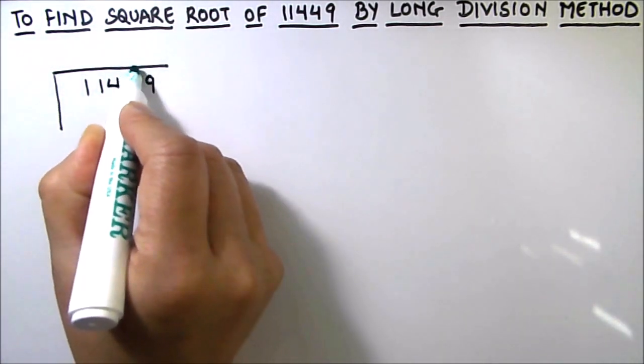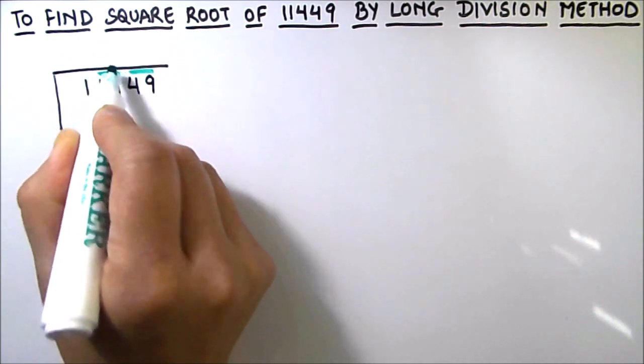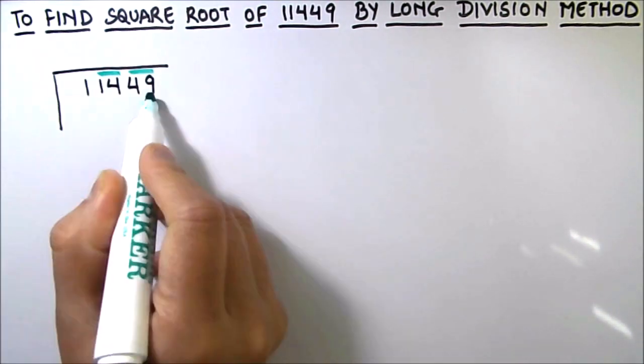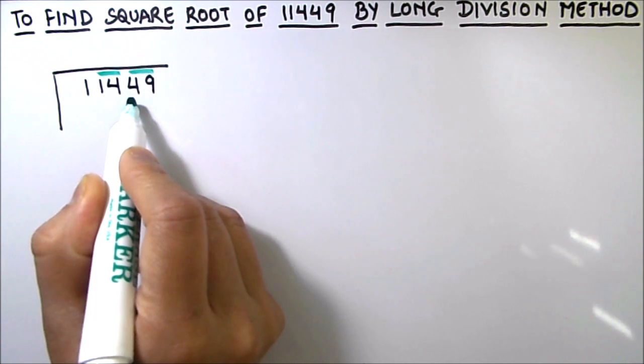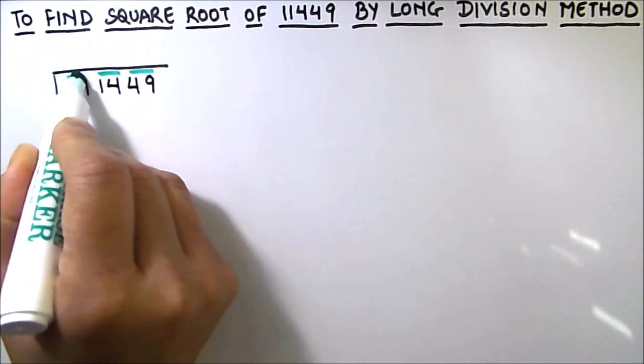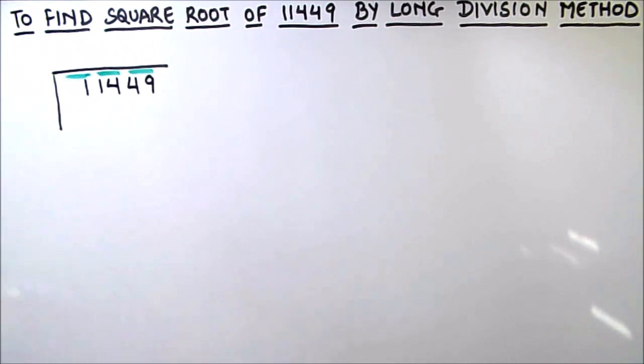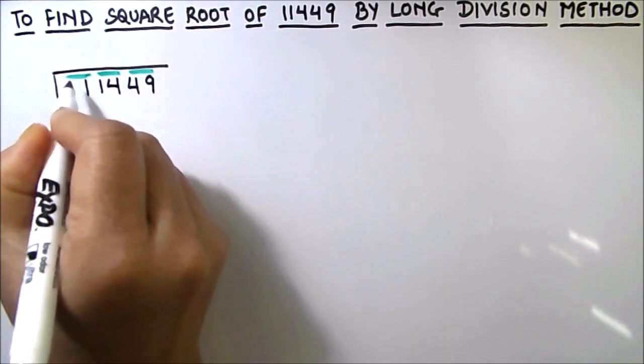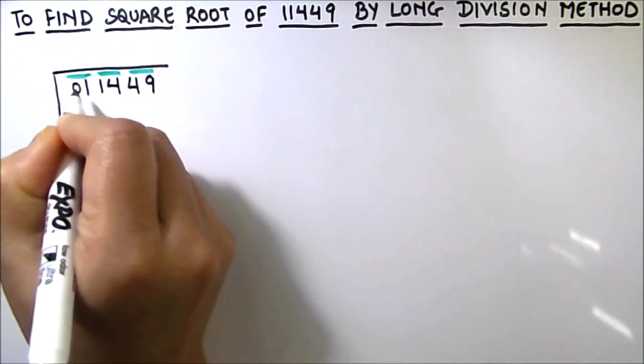So we have units place as nine. Nine and four will be our first group, four and one will be next group, and the last group is only number one. We can leave the number one as is or we can add zero in front of the number to make it a pair.